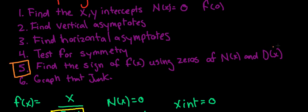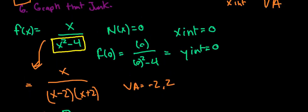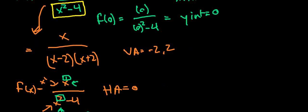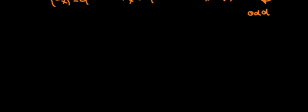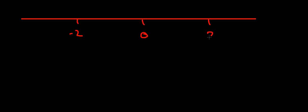Now that we have all our vertical asymptotes and zeros, let's set up the sign chart. When the numerator equals 0 we have the x-intercepts, and when the denominator equals 0 we have the vertical asymptotes. We had an x-intercept at 0 and vertical asymptotes at -2 and 2. Let's make this chart — I like to write what each value represents so I don't make mistakes.